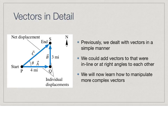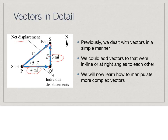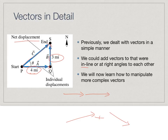Going back to chapter one and the math review, we set up an example where someone walked four miles east and then turned and went three miles north. You had individual displacements from here to here and then here to here. We talked about the tip-to-tail method of adding them and found the resultant net displacement. We dealt with simple cases — things in line or at right angles. Now we're going to be a little more complex, adding vectors that are not at right angles.